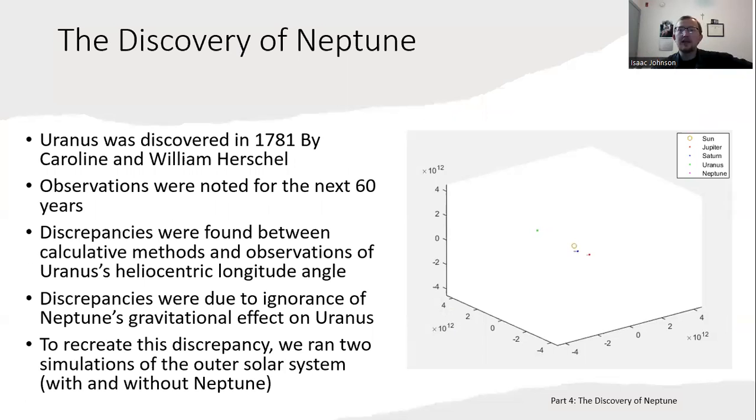Now we're on to the story of the discovery of Neptune. Uranus was discovered in 1781 by Caroline and William Herschel, and observations were noted for the next 60 years. There were two mathematicians in particular, John Couch Adams and Urbain Le Verrier, and both were really good at this perturbation theory where they could calculate where Uranus should be based on the planetary effects from Saturn and Jupiter. Their calculations didn't match the astronomers' actual observational data. There was a discrepancy in Uranus's heliocentric longitude angle. It turns out these discrepancies were due to the ignorance of Neptune's gravitational effect on Uranus.